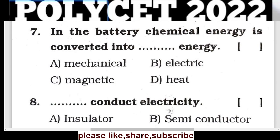Question 7: In a battery, chemical energy is converted into electrical energy. Option B is the correct answer.